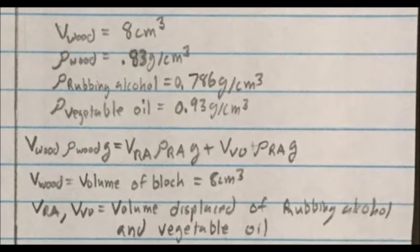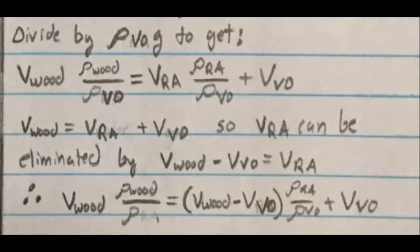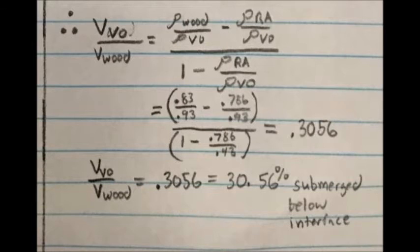This makes sense from both a properties and visual standpoint. The picture shows that about a third of the block is submerged and the density values for each of the system elements help to make sense of our findings.